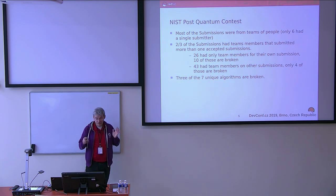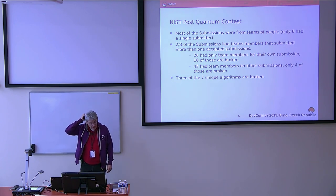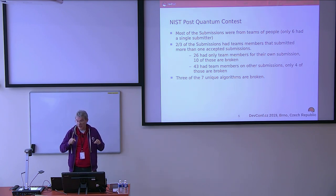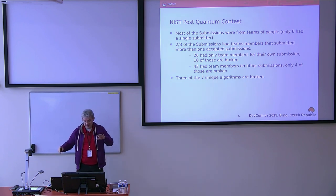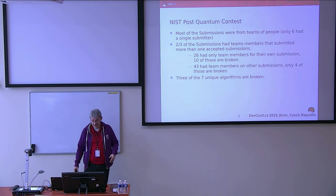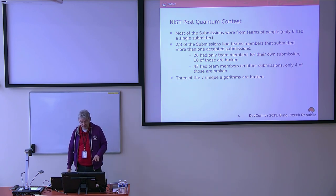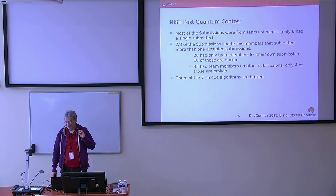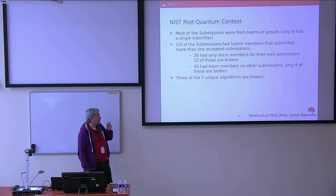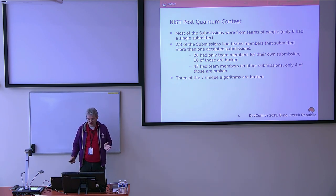Most of the submissions were from teams of people — only six had a single person submitting. Two thirds of the submissions had team members who submitted more than one application, so there are people who were on several different teams. Of those that only had people on one algorithm, there were 26 submissions. Ten of those 26 were broken — so almost half of the ones where you were only on one team are broken. The other 43 had about four broken, and three of the completely invented out-of-the-blue algorithms were broken immediately.